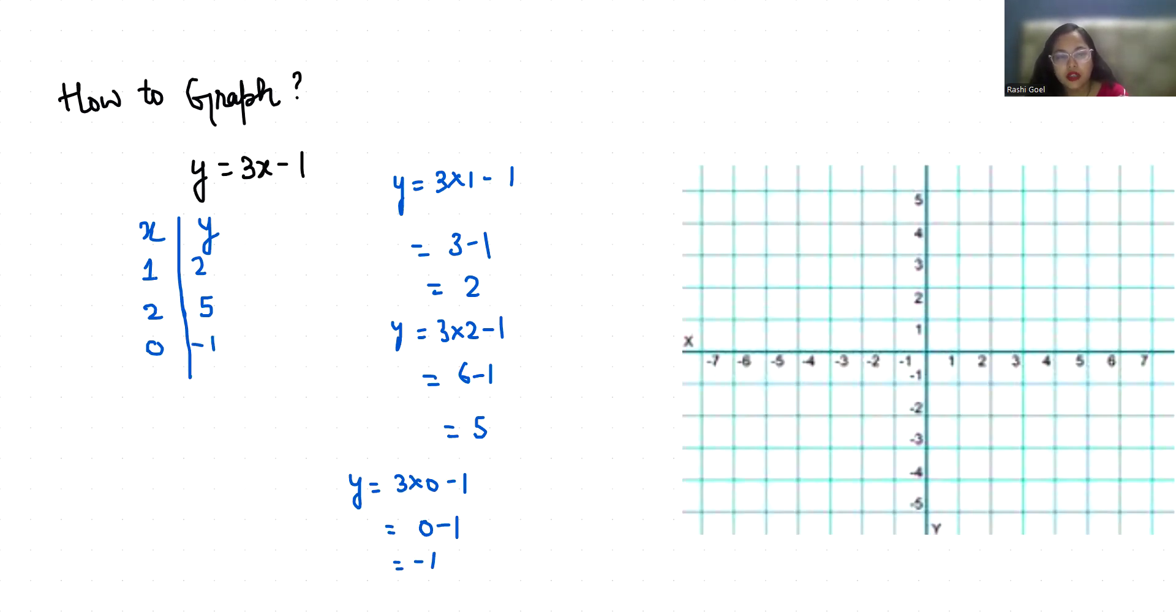Now if our x is minus 1, y equals 3 times minus 1 minus 1. So minus 3 minus 1 which equals minus 4.